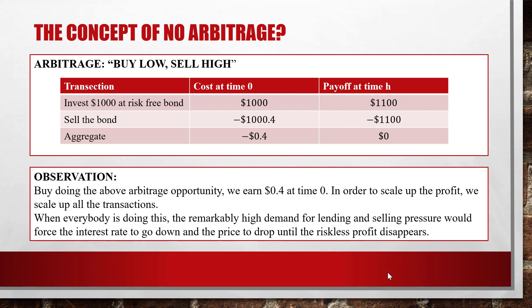In order to scale up the profit, we basically just scale up all the transactions. For example, at time zero instead of investing only $1,000 in the risk-free bond, we can invest $100 million. When everybody does this, the remarkably high demand for lending and selling pressure will force the interest rate to go down and the price to drop until the risk-free profits disappear. One lesson we learn here: no matter how good a strategy is, when many people follow it, the benefit is automatically cancelled out — which means followers can never be leaders.